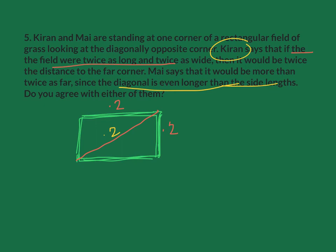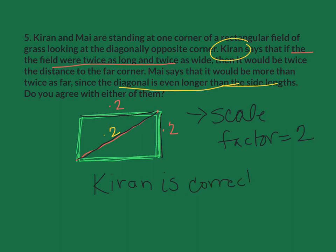Hopefully, especially due to the way I just drew this out, we can see that if we multiply both the length and the width by 2, that would mean the scale factor is 2. And if the scale factor equals 2, then this diagonal would also be multiplied by 2, just like we showed here. That means it's proportional and that Karan is correct, because there's a scale factor of 2.